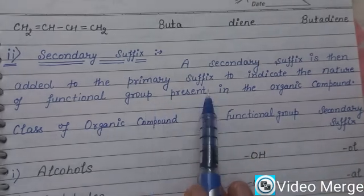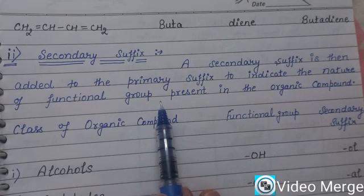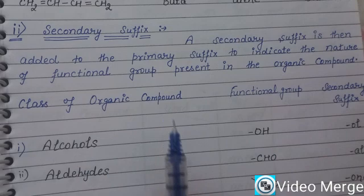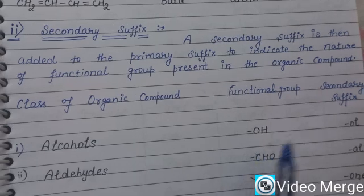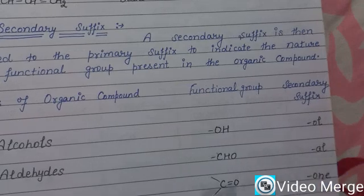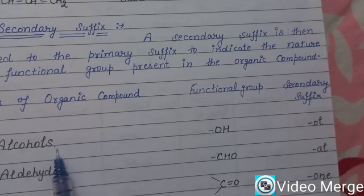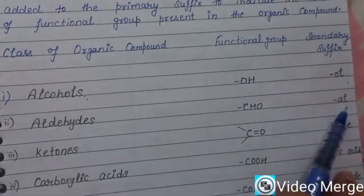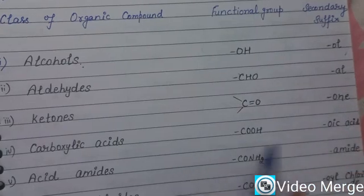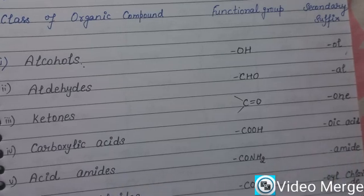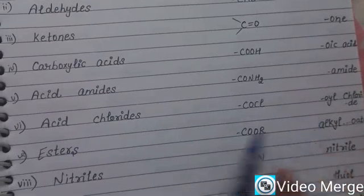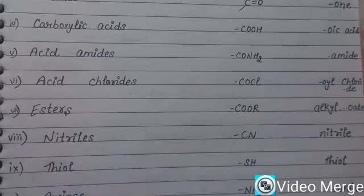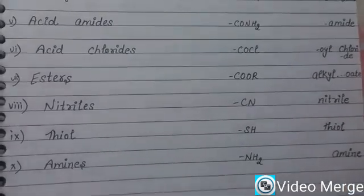Now we have the secondary suffix, which is added to the primary suffix to indicate the nature of the functional group present in the organic compound. Different classes of organic compounds have different functional groups, and for each functional group, there is a different secondary suffix. For example: for alcohols, the secondary suffix is '-ol'; for aldehydes, it is '-al'; for ketones, '-one'; for carboxylic acids, '-oic acid'; for amides, '-amide'; for acid chlorides, '-oyl chloride'; for esters, 'alkyl -oate'; for nitriles, '-nitrile'; for thiols, '-thiol'; for amines, '-amine.'